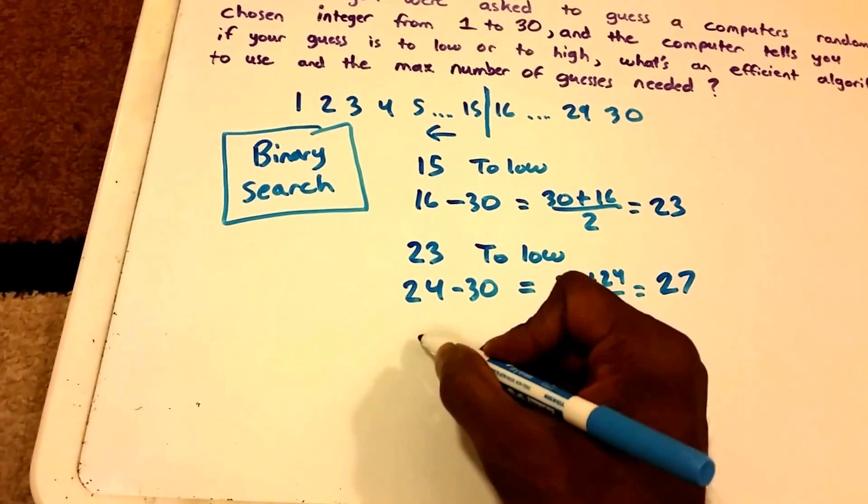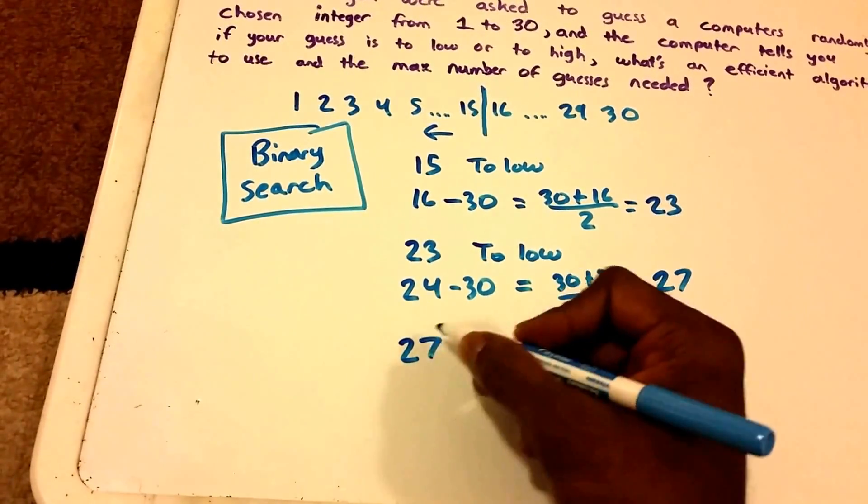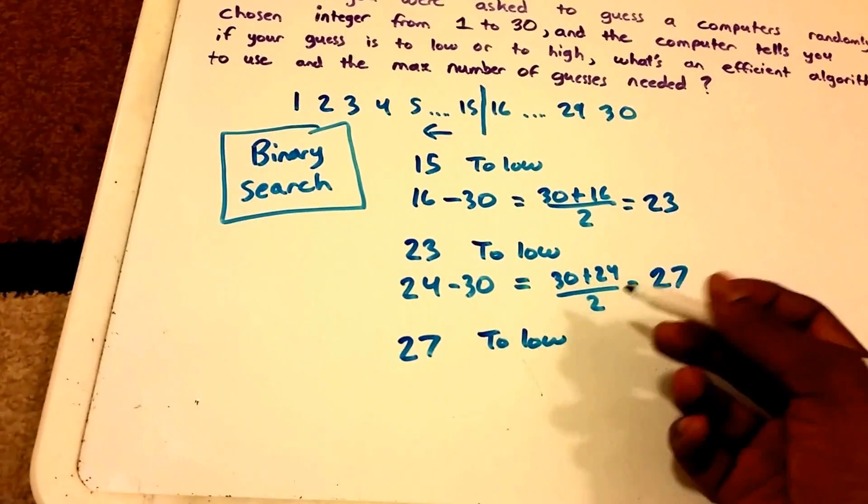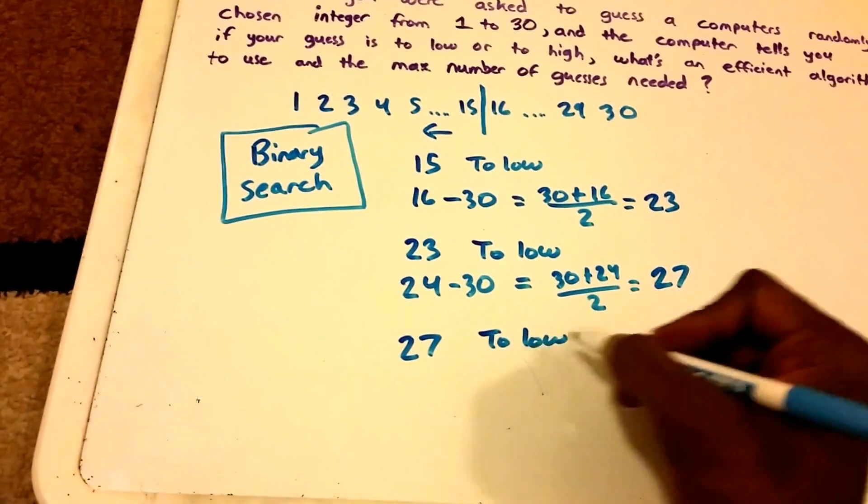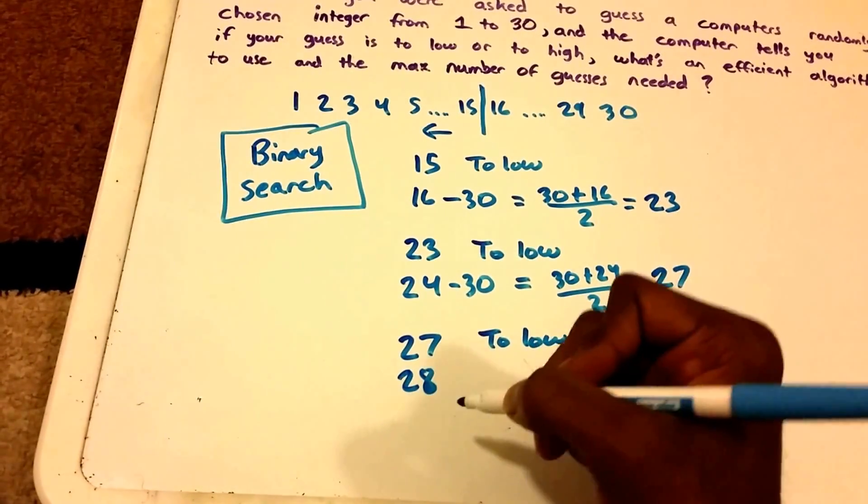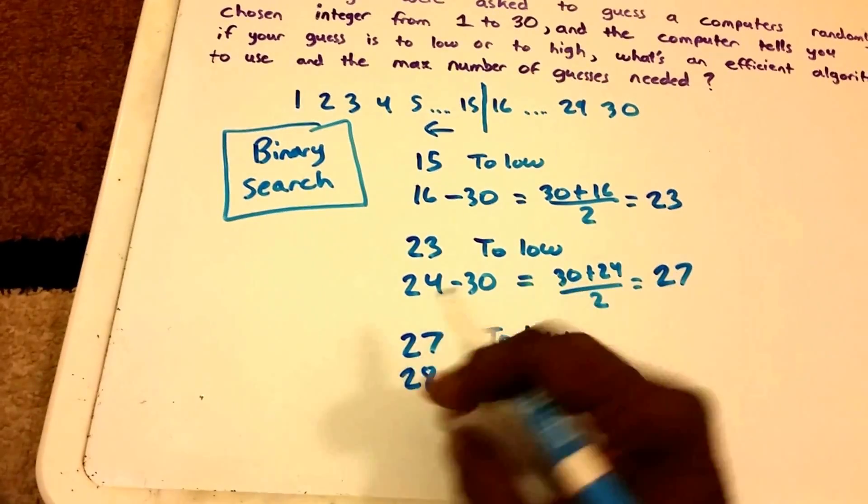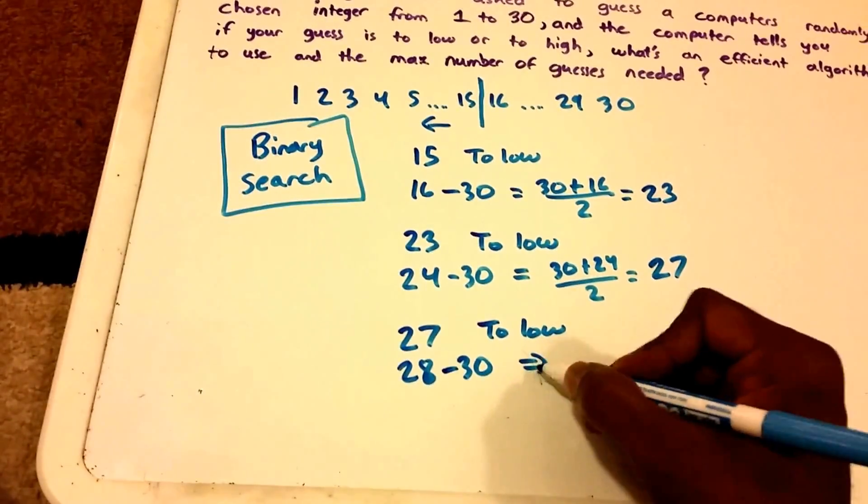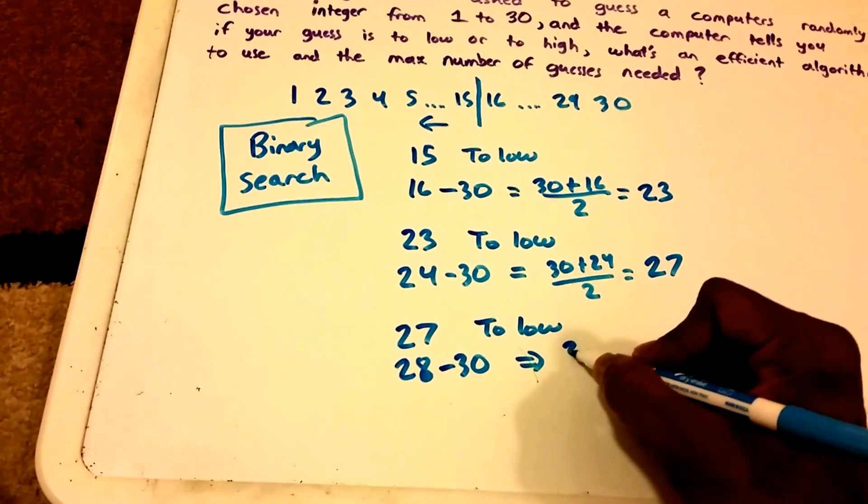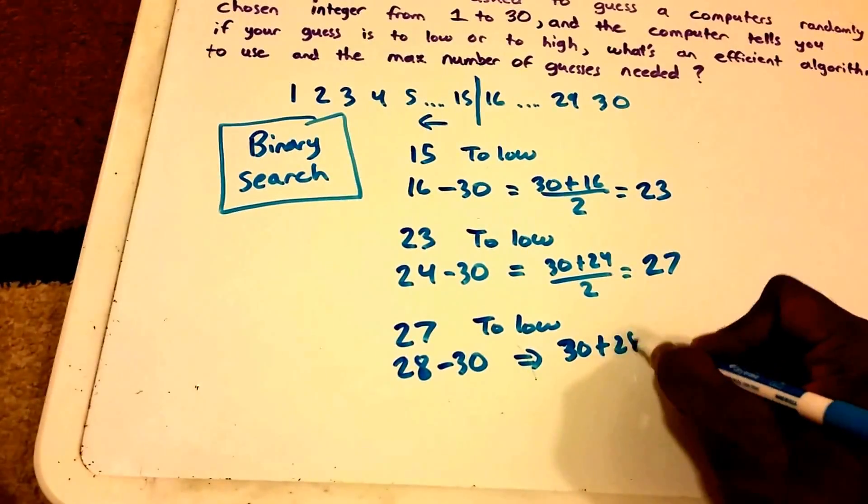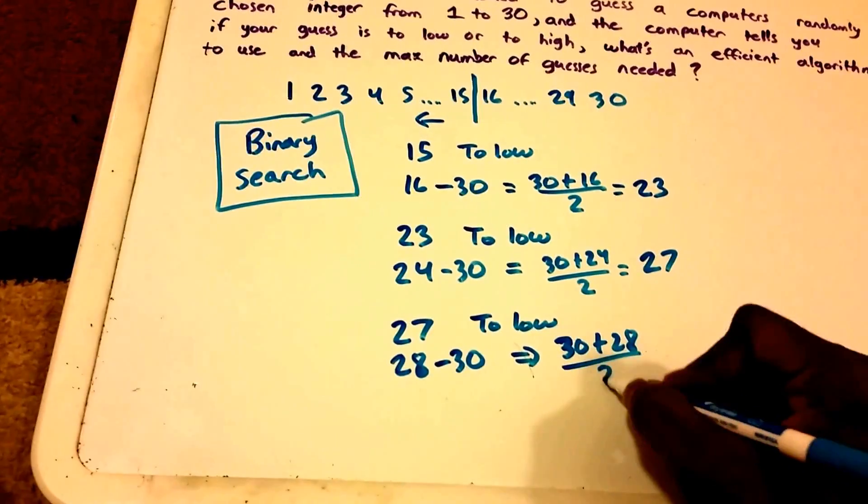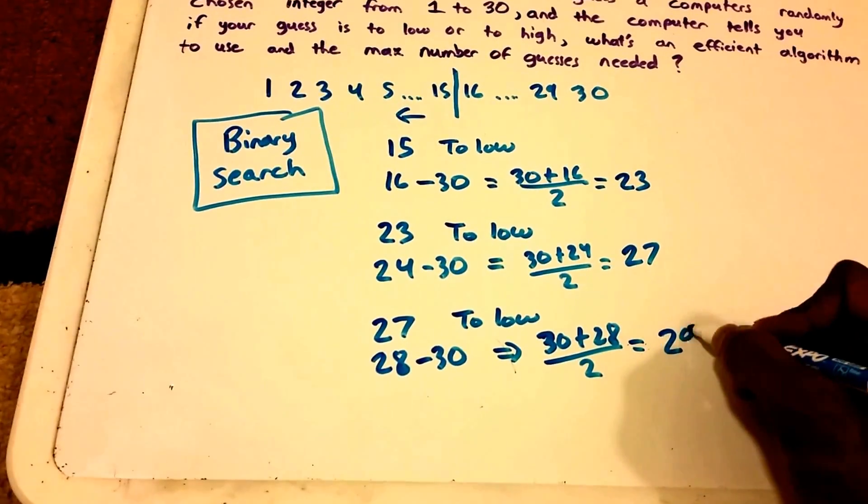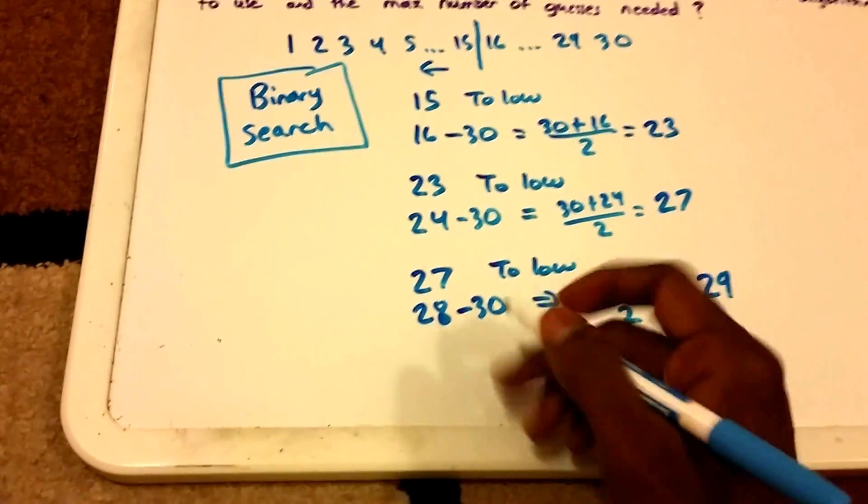And so we're going to guess 27. So 27 is in the middle there. So we're going to say, is your number 27, computer? The computer is going to say, no, that's still too low. You have to guess a higher number. So the number of possible numbers or the range of possible numbers is 28 to 30. So we can figure out the middle, obviously, is 29. But we'll do the math here. 30 plus 28 divided by 2. This gives us 58 divided by 2, which is 29.